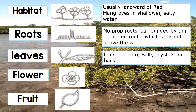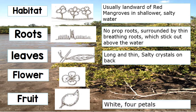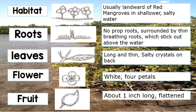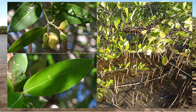The leaves are long and thin with salty crystals on the back. The flower is white with four petals. The fruit is about an inch long and it is flattened. Here we have the fruit, the leaves, and the roots of the black mangroves.